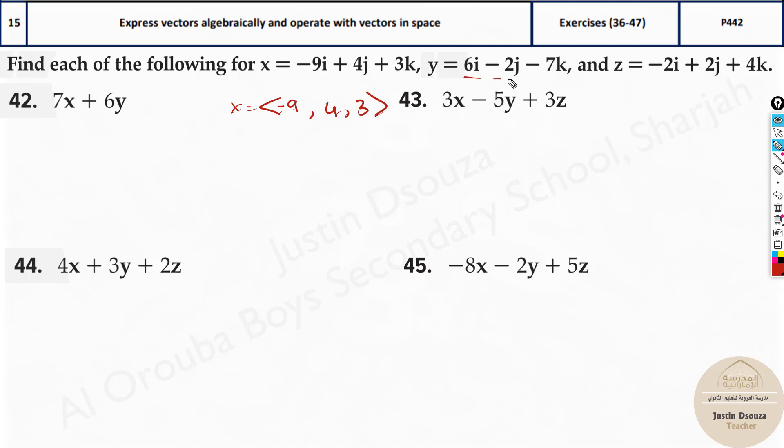Then y is over here 6, minus 2, minus 7 and lastly z is minus 2, 2 and 4.